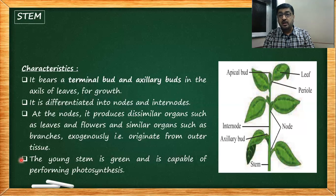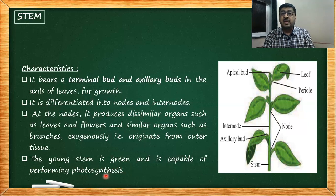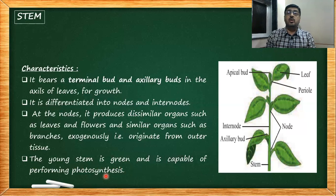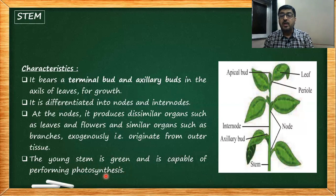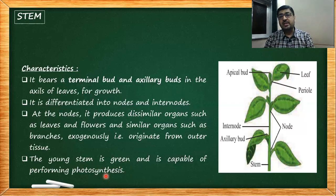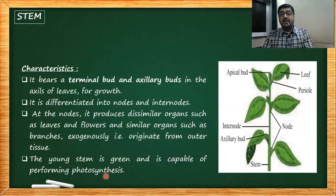A young stem is green and capable of performing photosynthesis. When the stem is young, before the leaves come out, the autotrophic function is not yet developed in leaves, so the stem shoulders the responsibility of doing photosynthesis. These are the characteristics of a stem.